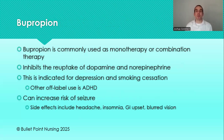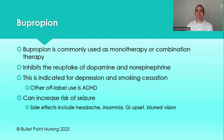Next we have bupropion, which is becoming more and more popular in mental health. It's commonly used as a go-to for patients not tolerating SSRIs, or it can be used in addition to an SSRI under close supervision — again because of serotonin syndrome risk. It works by inhibiting the reuptake of dopamine and norepinephrine, so it works differently than an SSRI. It's indicated for depression and also used off-label for smoking cessation (brand name Zyban) and depression (Wellbutrin). It helps patients with improved focus, which is why it's sometimes used off-label for ADHD.